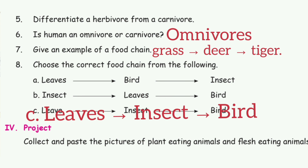Eighth question: choose the correct food chain from the following. The answer is option C: leaves → insect → frog. Thanks for watching.